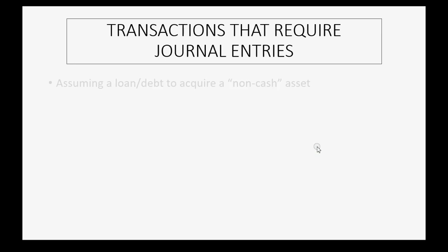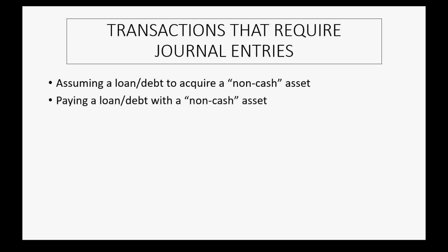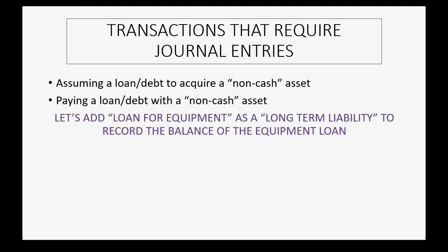We know that assuming a debt or a loan for a non-cash asset like equipment would be a transaction we would have to record in a journal entry. Also, if we were paying back the loan or debt with equipment or some kind of non-cash asset, that would also be a transaction requiring a journal entry. In order to do this, let's add an account in our chart of accounts called Loan for Equipment and make sure the type is a long-term liability.